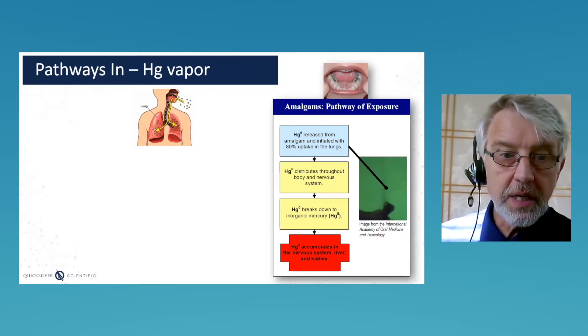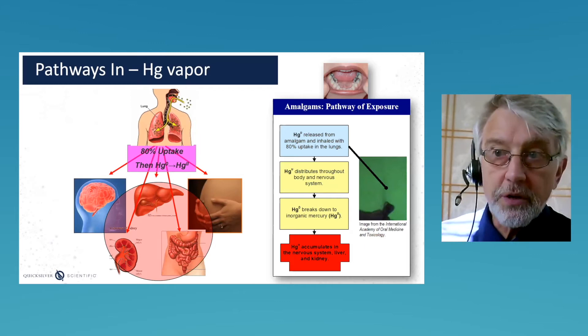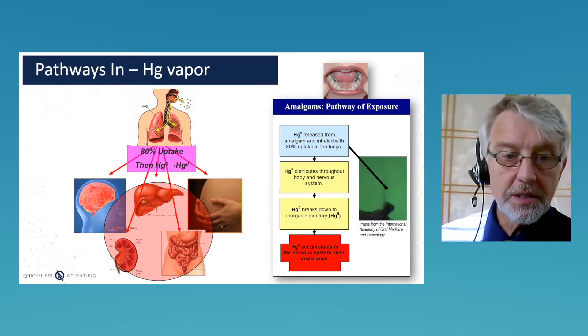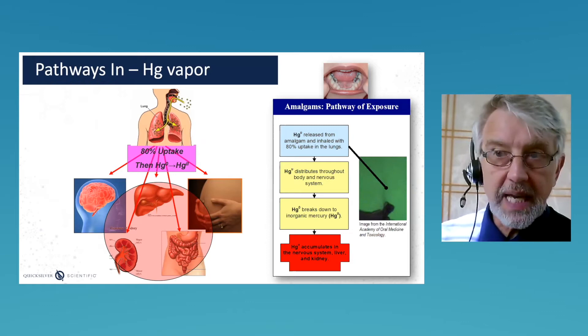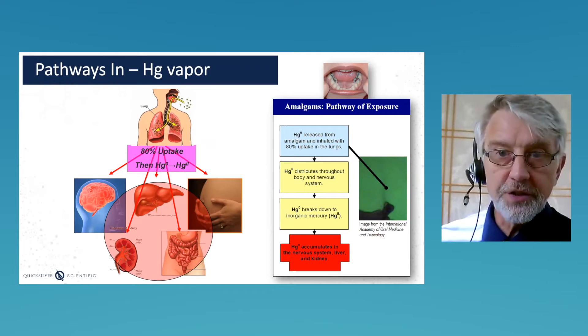Inorganic mercury comes from mercury vapor, and the primary source for humans is amalgam fillings. Mercury has a high vapor pressure — it's always gassing off. We breathe it in and absorb it through the lungs into the blood, where it's converted to the inorganic form.